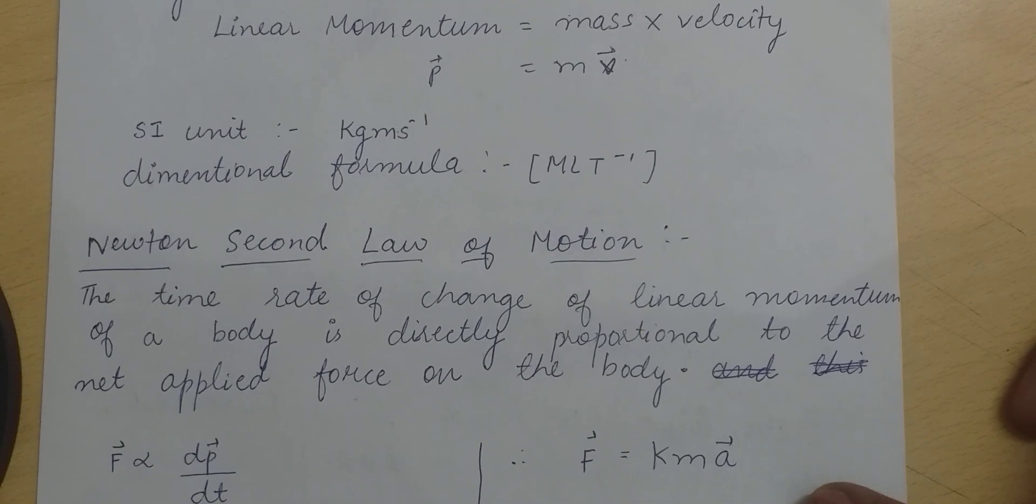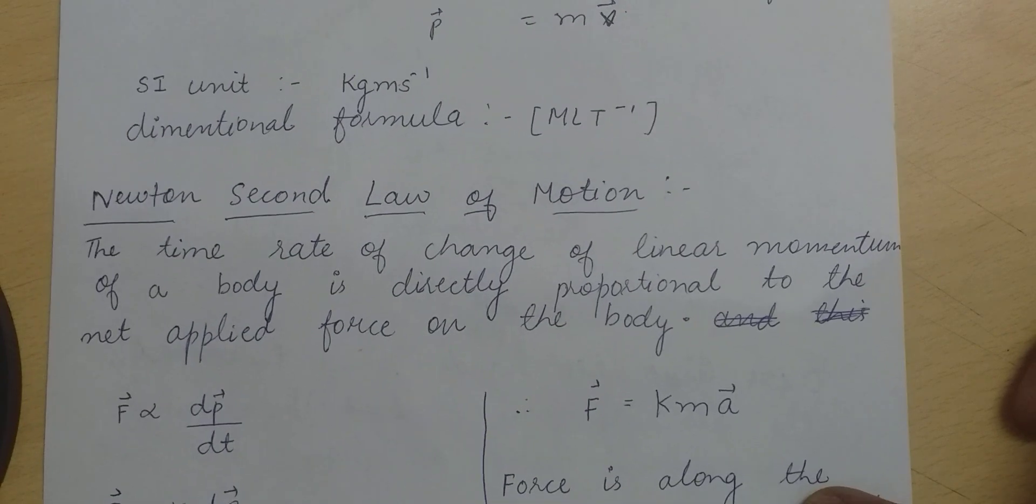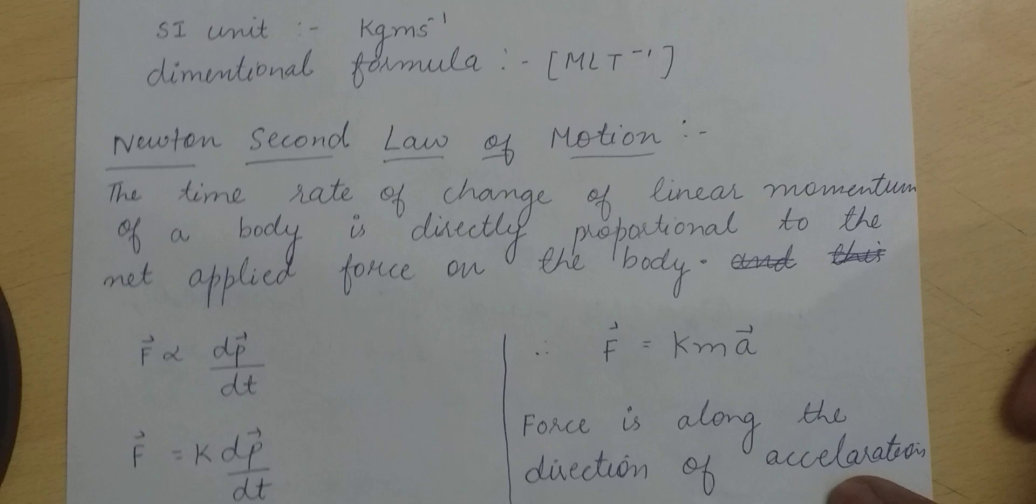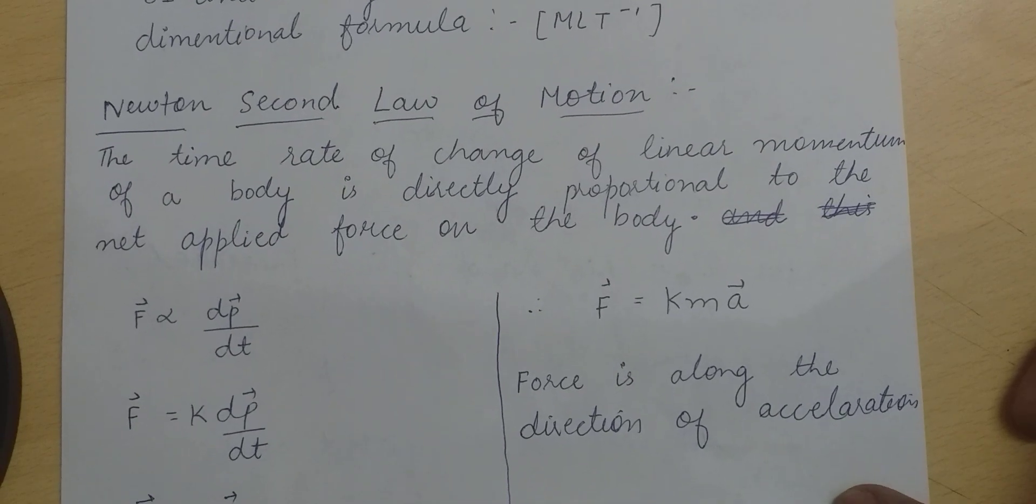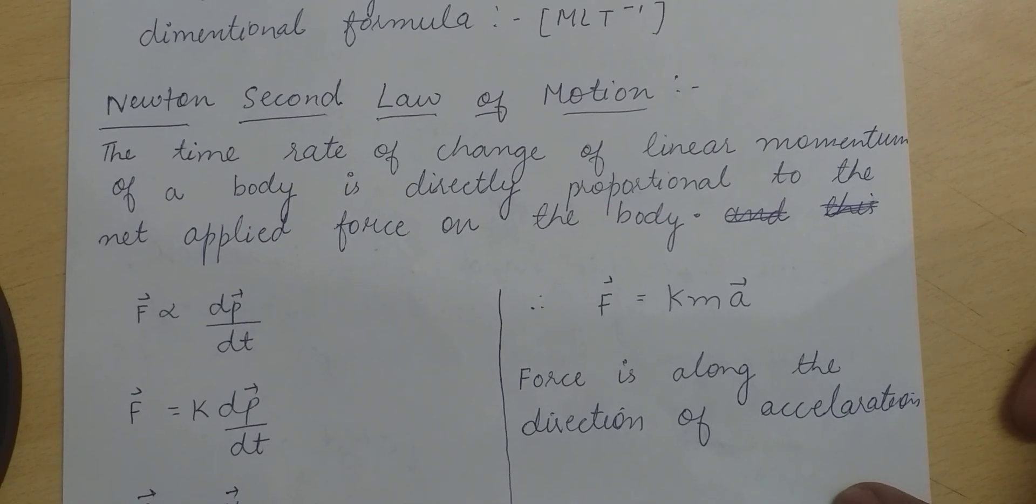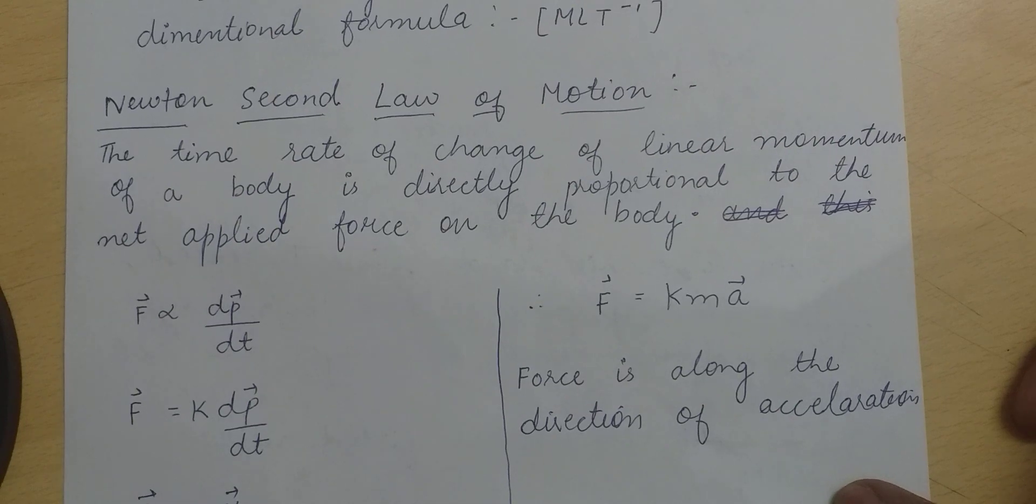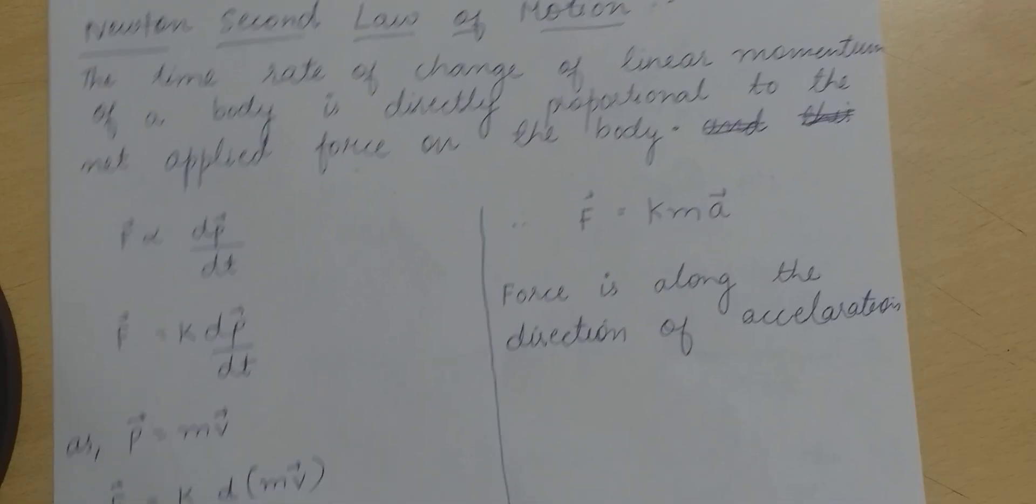Newton's second law of motion: the time rate of change of linear momentum of a body is directly proportional to the net applied force on the body. In mathematically, it can be derived as force is directly proportional to dp vector upon dt.